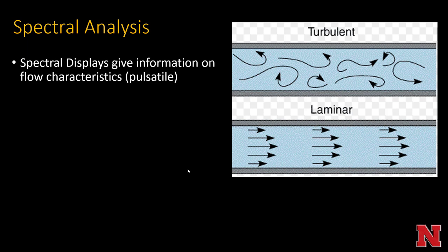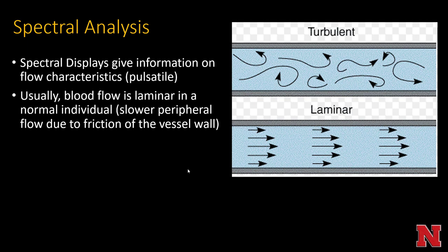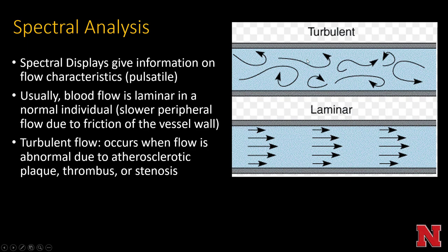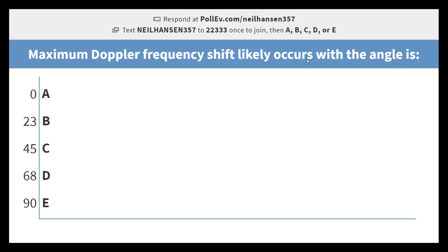Spectral displays give information on flow characteristics such as pulsatility. Blood flow is usually laminar — slightly slower along the peripheral edges due to friction with the vessel wall and faster in the center. Turbulent flow is irregular and haphazard, occurring where there is atherosclerotic plaque, thrombus, or stenosis, producing a more turbulent-appearing flow pattern.